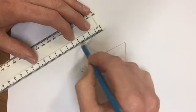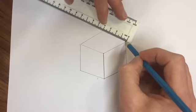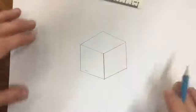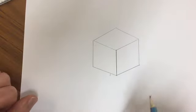And then finally, another set of parallel lines, so a parallel line with that, about four centimeters, the same there. So you should end up with a cube like that, and that is using the isometric technique.